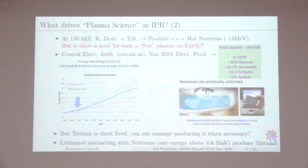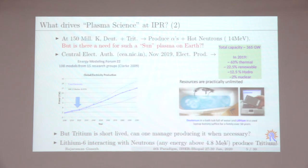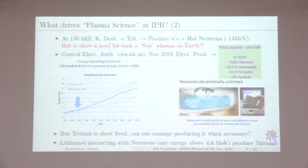We are already using thermal, renewable, and hydro resources, and we are left with nuclear options. Rather than nuclear fission, which we are already doing, let's talk about nuclear fusion. Can we make thermonuclear fusion processes happen on Earth in a controlled manner? The process can occur at about 150 million degrees Kelvin at a density which is one-millionth of air density, as against the Sun's 100 times copper density.